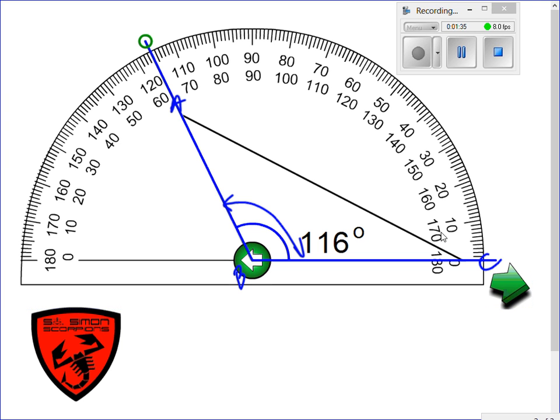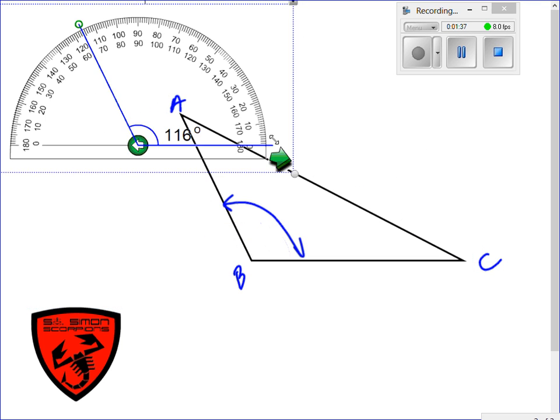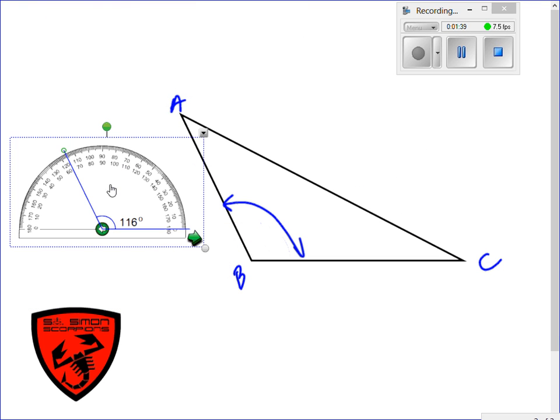So, let's take that information and let's put that off here to the side. Angle B is 116 degrees, and we also, because of that, we know that this is an obtuse angle triangle.